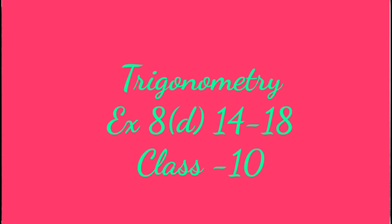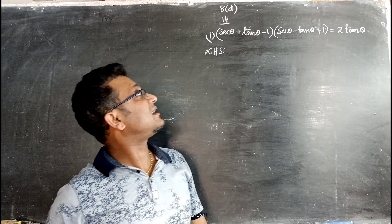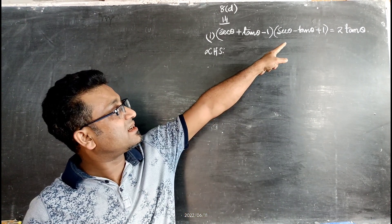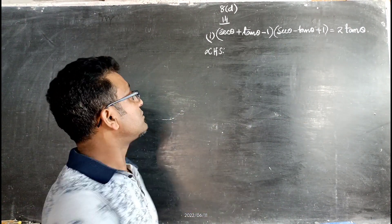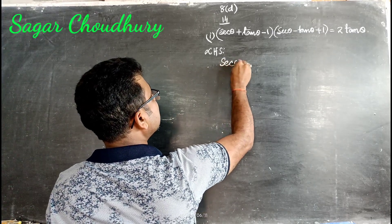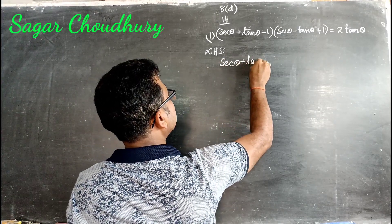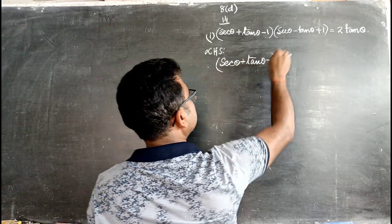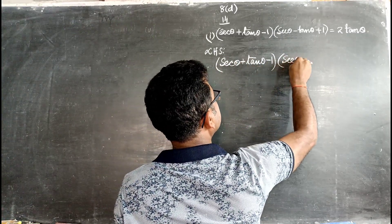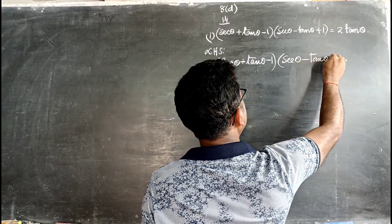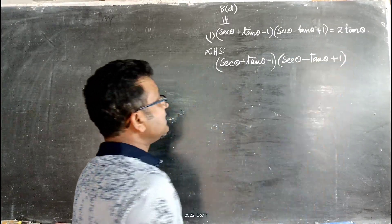Question number 14, first part. The question is: (sec θ + tan θ - 1) divided by (sec θ - tan θ + 1). Starting from the left hand side: sec θ + tan θ - 1 over sec θ - tan θ + 1.